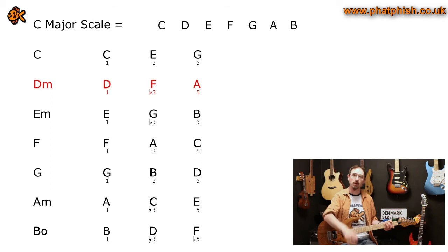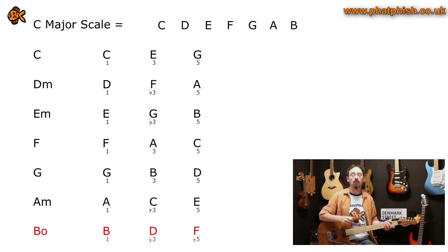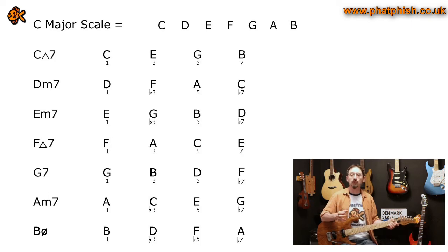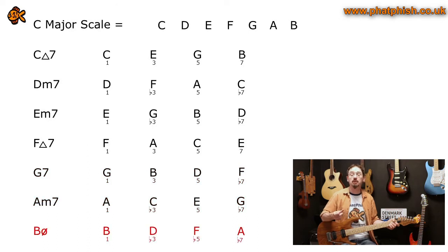If we repeat the process all the way down the scale, we end up with: one major, two minor, three minor, four major, five major, six minor, and seven diminished on the last degree. A similar process applies when harmonising the scale in seventh chords — we still take alternate notes but rather than stopping at the fifth degree, we add in the seventh degree. That gives us: one major seven, two minor seven, three minor seven, four major seven, five dominant seven, six minor seven, and seven half-diminished.